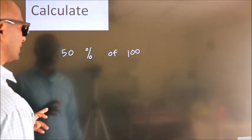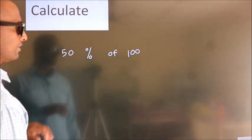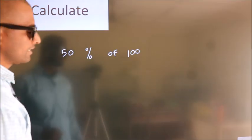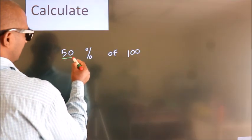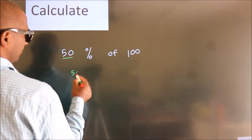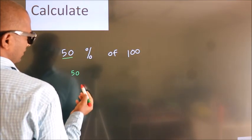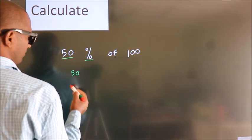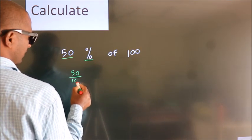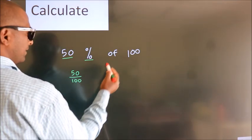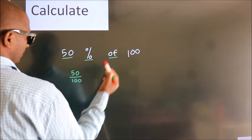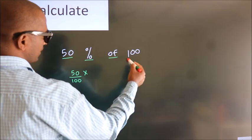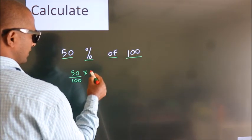Calculate 50% of 100. How do we calculate this? This number as it is, we write. In place of the percentage, we write divided by 100. In place of 'of' we write multiply. This number as it is.